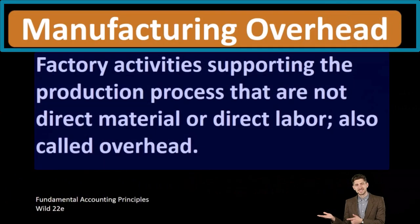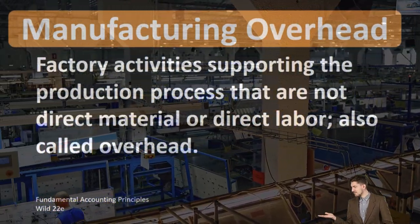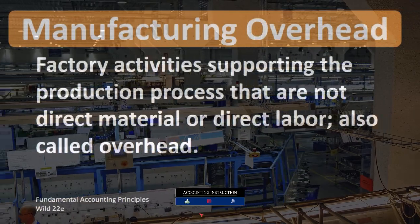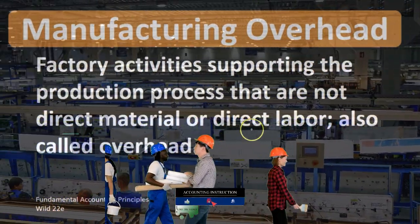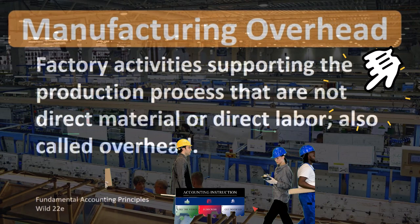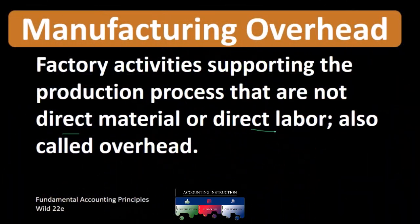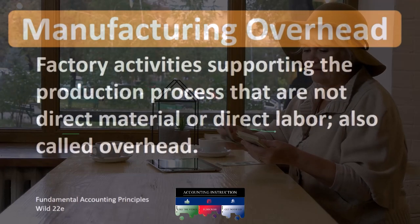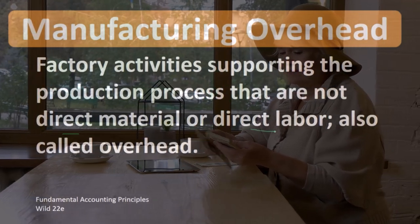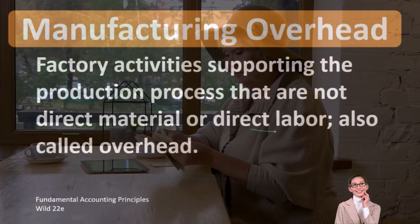When thinking about manufacturing overhead, this definition defines it by saying what it is not. It is not direct materials and it is not direct labor. What it is — as are direct material and direct labor — are components of inventory. Therefore, we are talking about a production process where we are producing and tracking inventory. We generally track three things in relation to inventory.